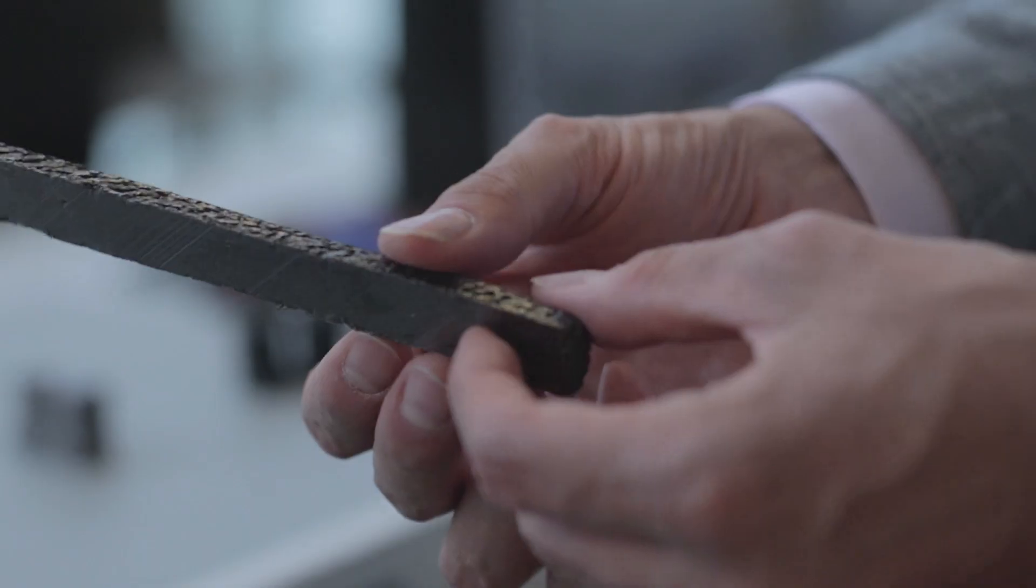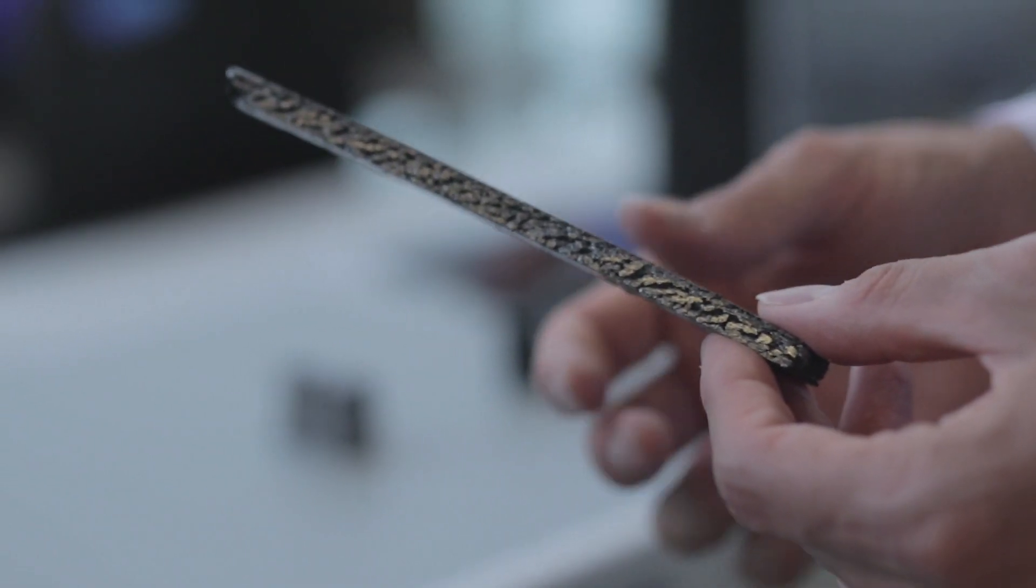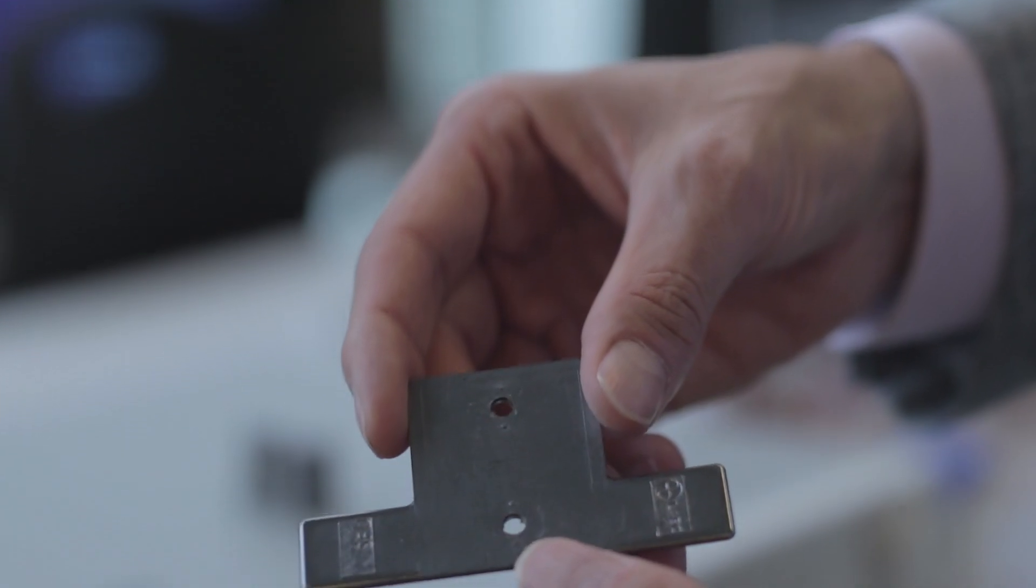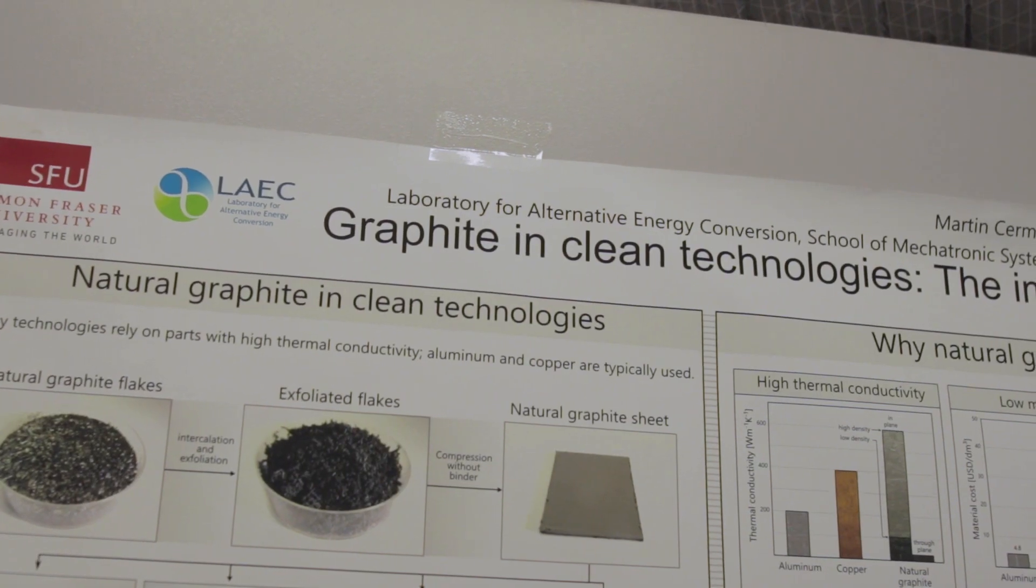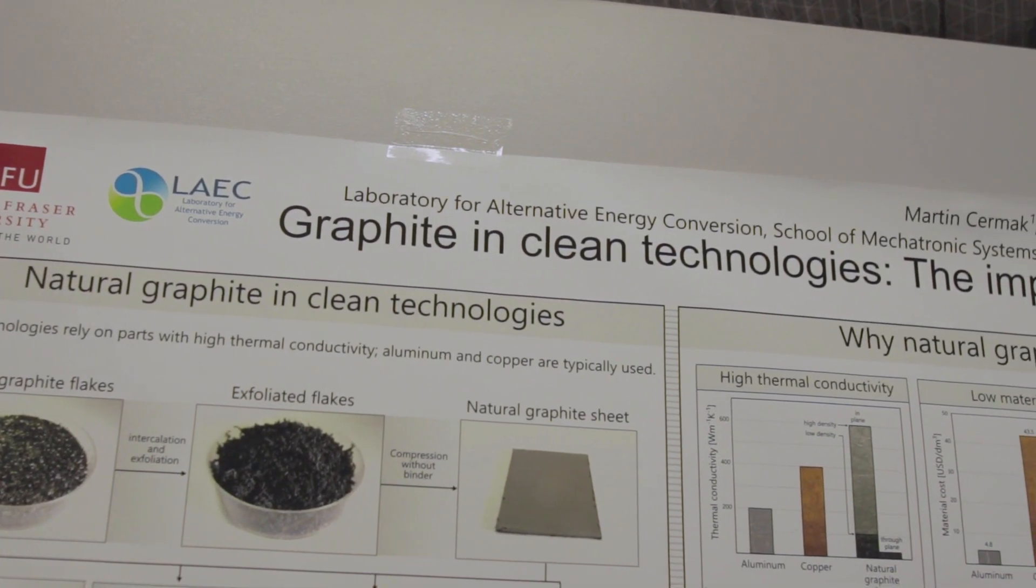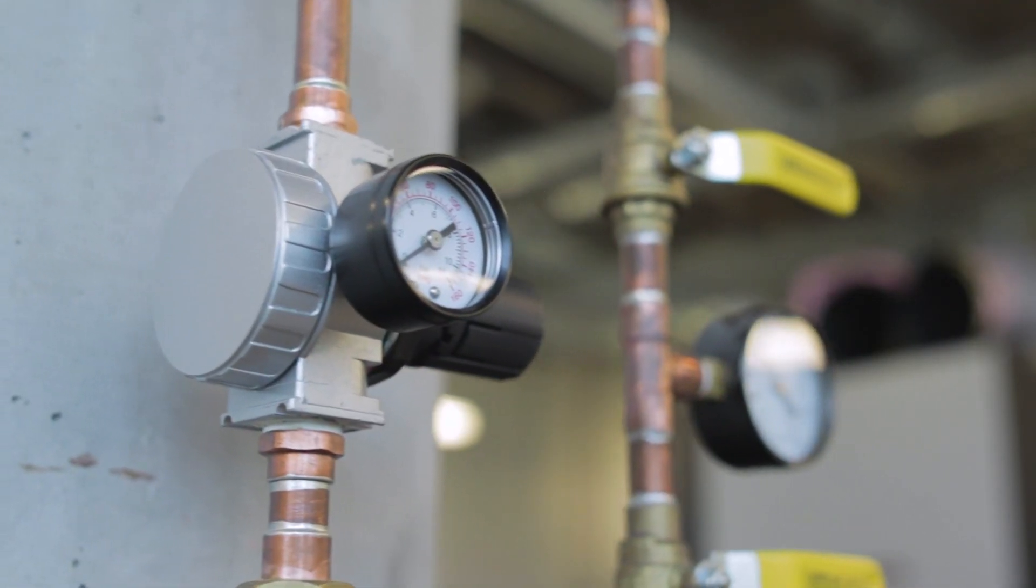We are also introducing a new generation material, graphite, that is much lighter and can be manufactured much faster in Canada using Canadian raw material. That will allow us to design the next generation battery charger for the automotive industry.